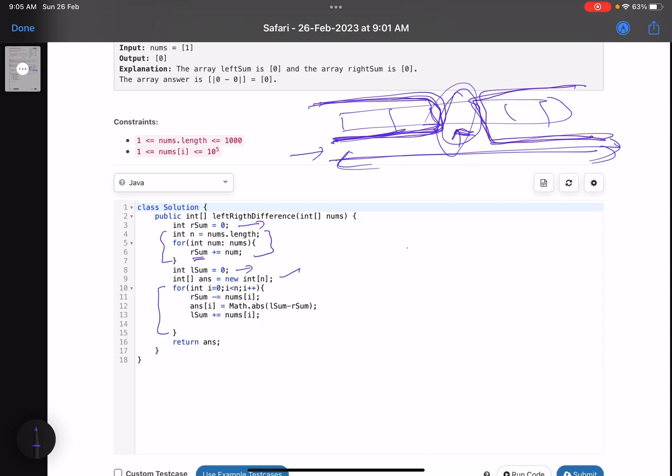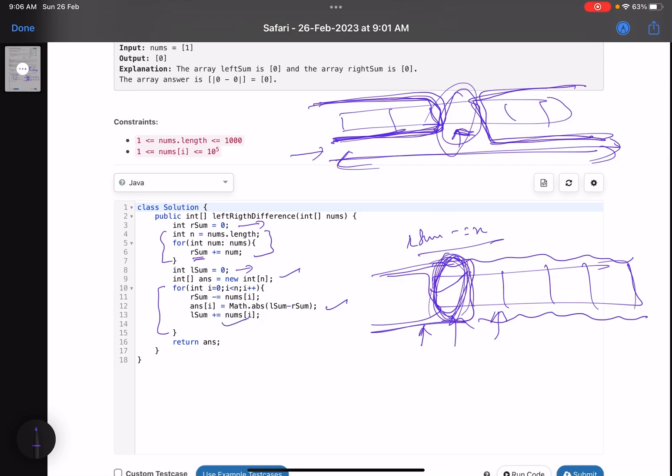Now just see the trick here. You start traversing. And then the first thing that you do is rSum minus equals to remove the current element. Why? Because if this is your array, you are at this position. So your rSum has the sum of all the elements. First thing is you remove this part because rSum will include only these elements. So you remove the current element. Now left sum is initialized by zero only. And that is true because you don't have any element. So you find the absolute value. Now, once you find the absolute value for the next step, that means when you move here, the left sum should include this element. So that is why you update your left sum. So left sum plus equals to nums[i].